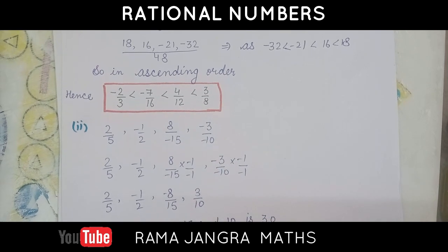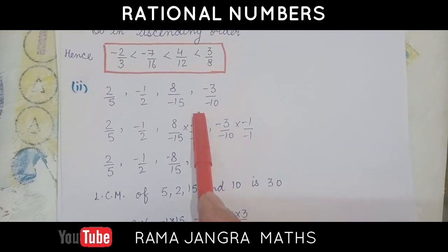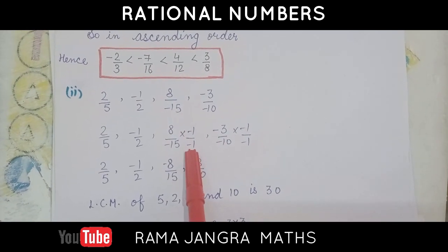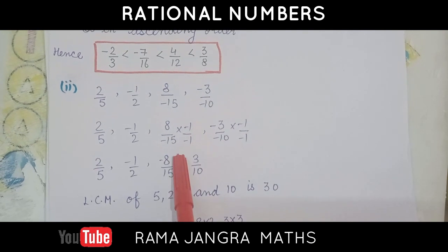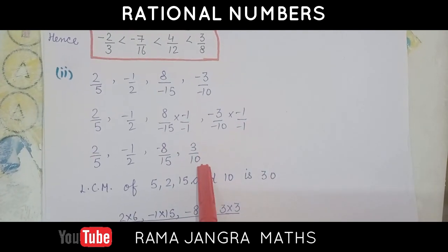Here, we have denominators negative. In these two terms, denominators are negative. So, we have to make the denominators positive. So, we can multiply and divide it by minus 1. So, it is minus 8 by 15, and it is 3 by 10.